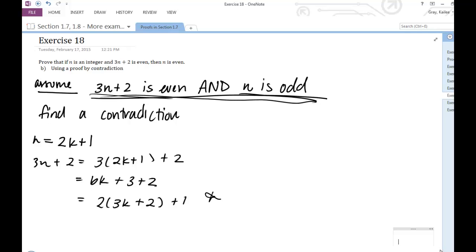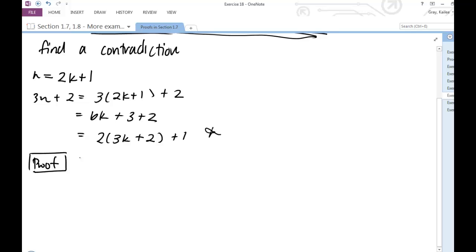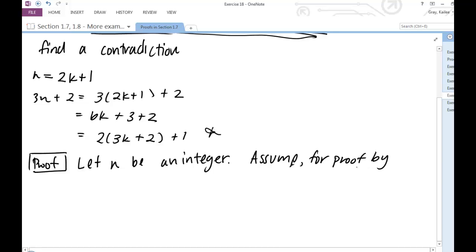Let's write it up pretty. So I'm clearly beginning my proof by contradiction here. So I'm going to say, let n be an integer. Assume for proof by contradiction that 3n plus 2 is even, and n is odd.